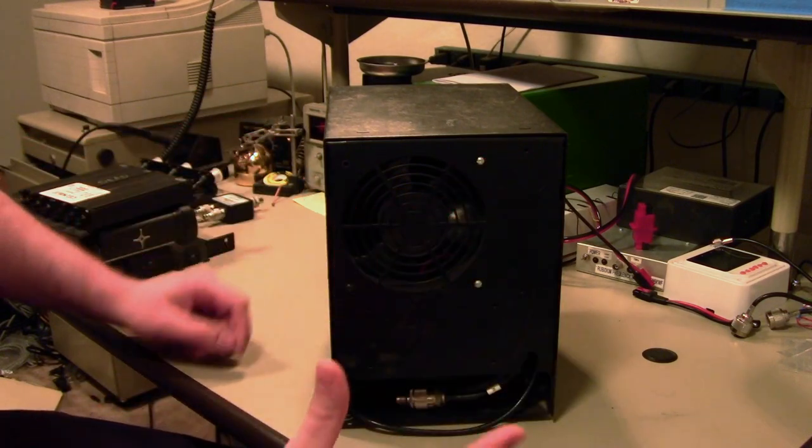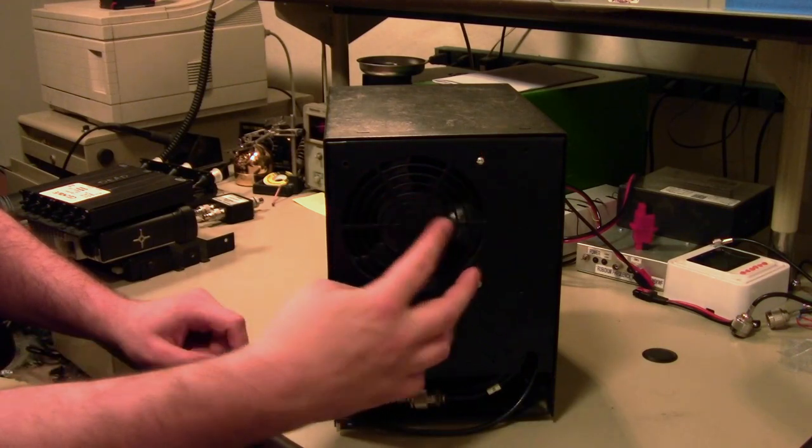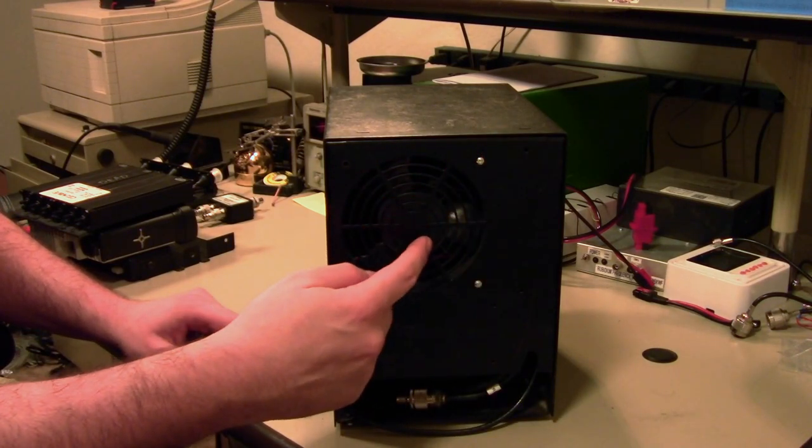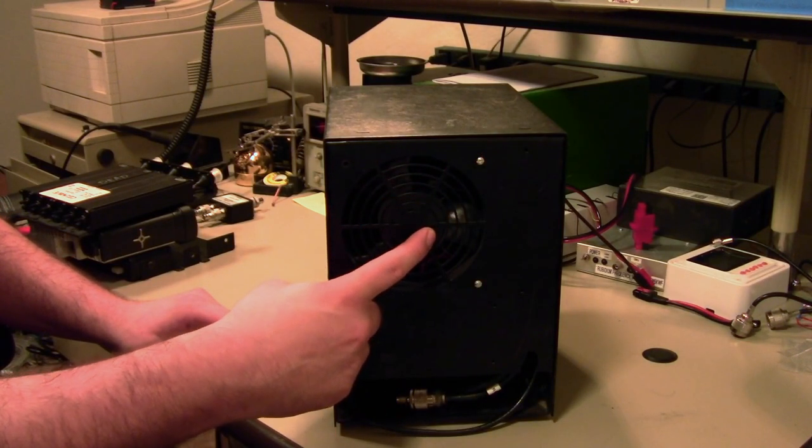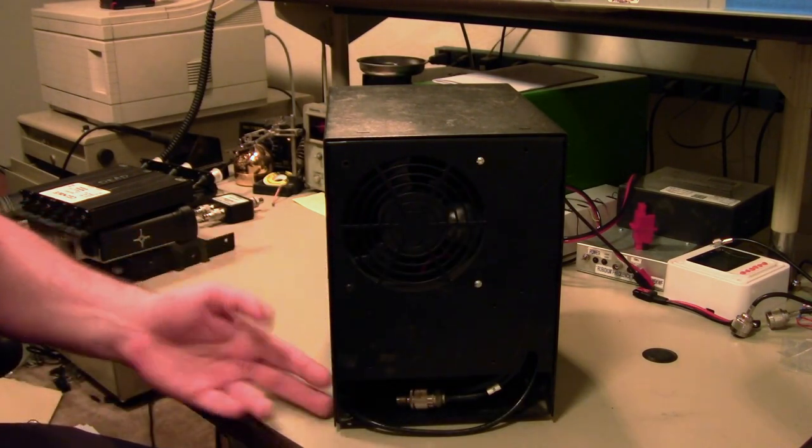I won't bother taking this off for you because all you've got inside of it is your repeater controller, two audio cables going down to your two radios. It has a thermostat clipped to the transmit radio that controls the fan, and you've got your power supply and your duplexer.